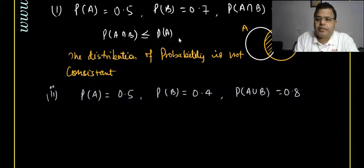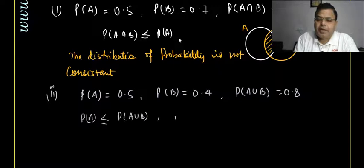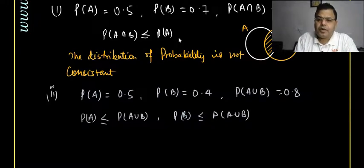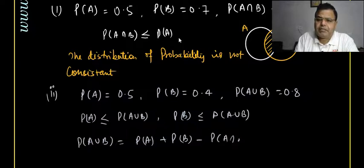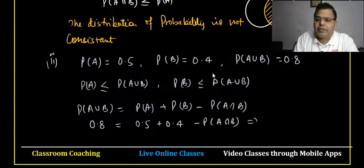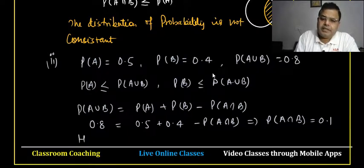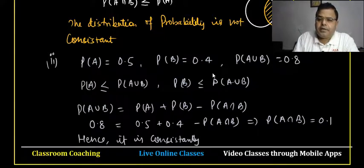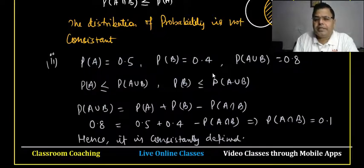Here P(A) < P(A ∪ B) and P(B) < P(A ∪ B), both of which are true. Using the formula P(A ∪ B) = P(A) + P(B) − P(A ∩ B), we get 0.8 = 0.5 + 0.4 − P(A ∩ B), so P(A ∩ B) = 0.1, which is less than both P(A) and P(B). Hence this is consistently defined.